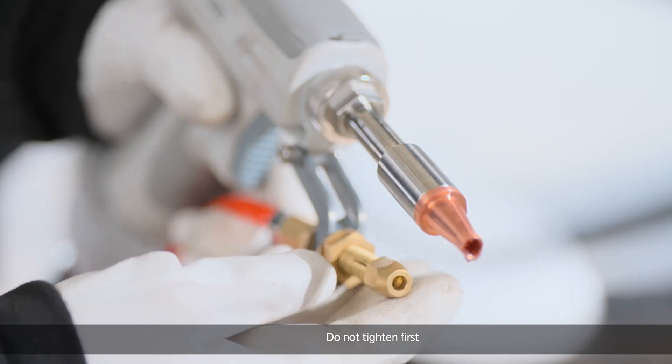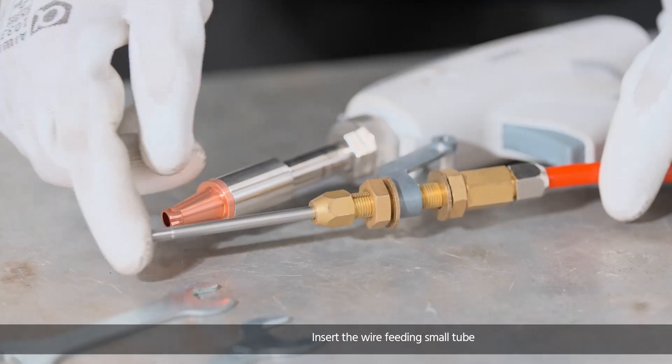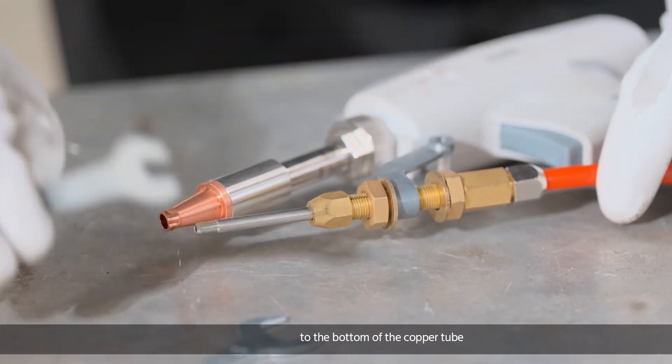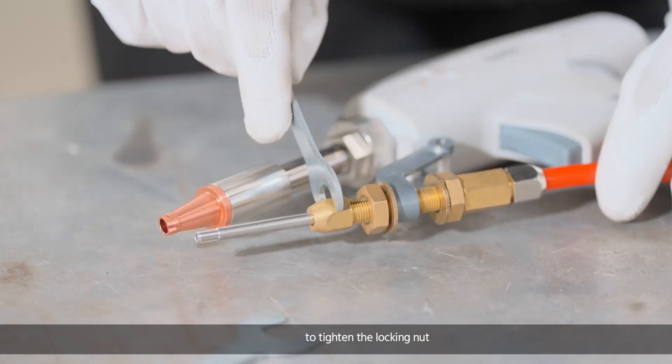Do not tighten first. Insert the wire feeding small tube to the bottom of the copper tube. Use the wrench within the package to tighten the locking nut.